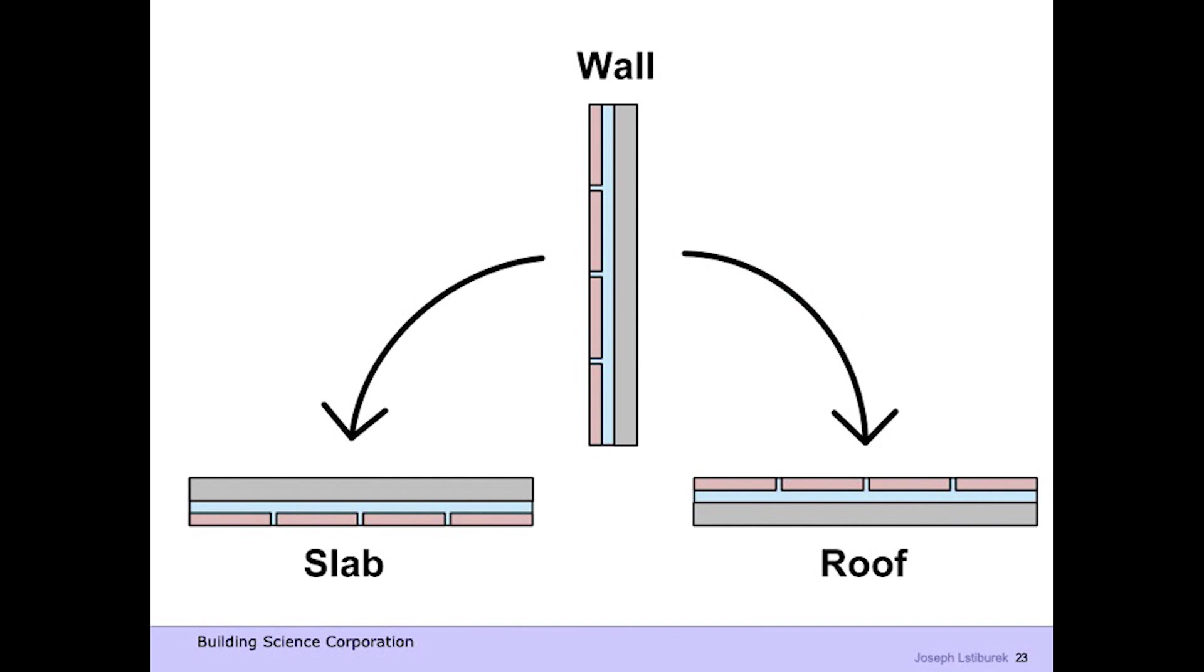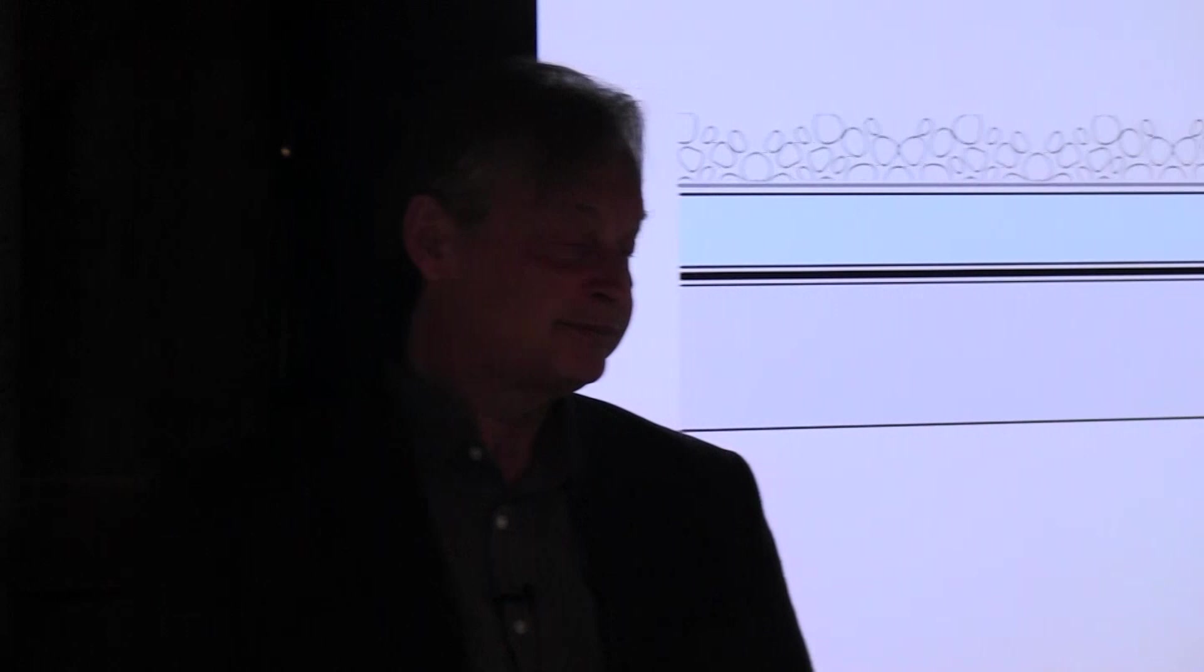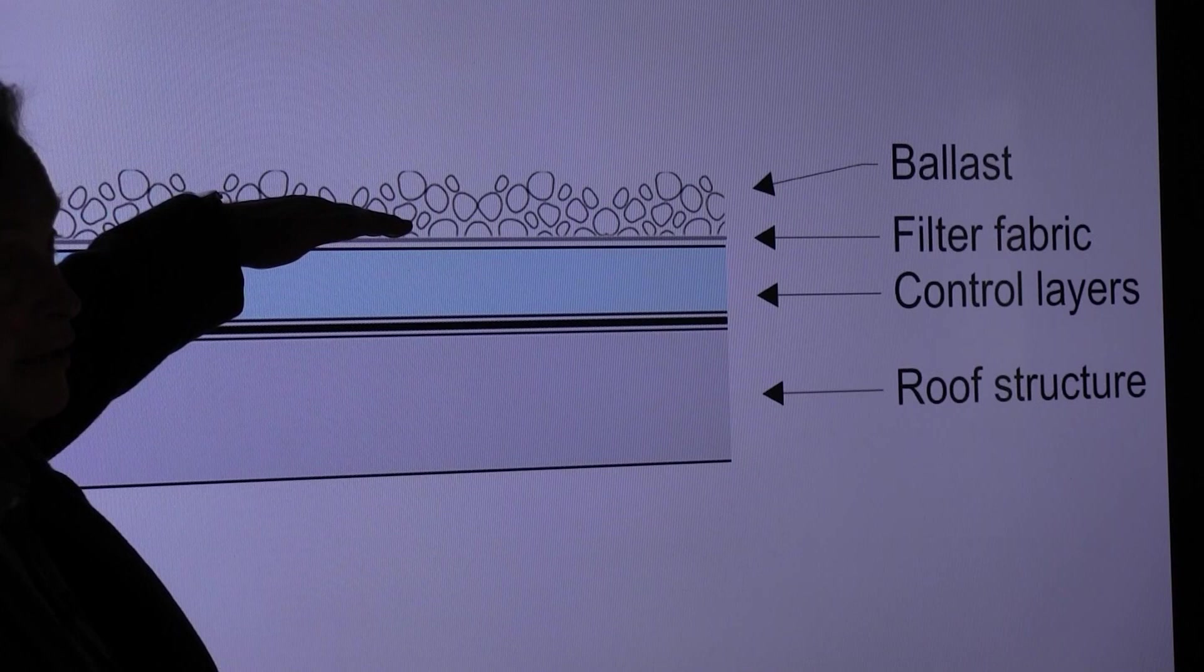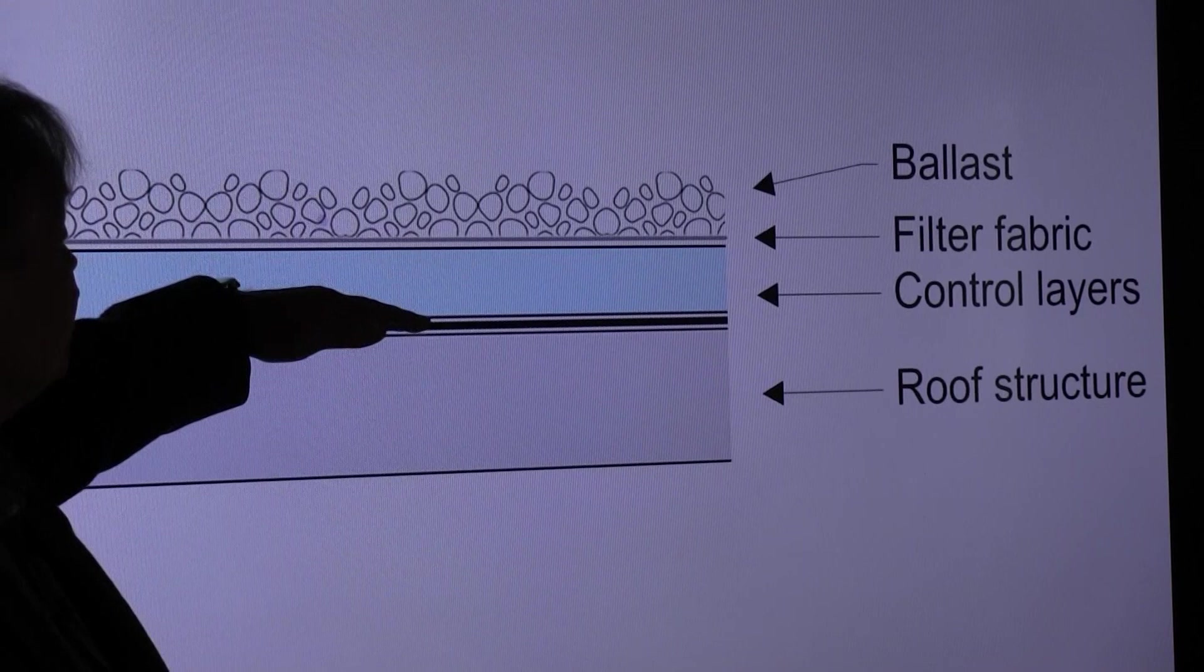So if I take the perfect wall and I lay it one way, I get the perfect roof. I lay it the other way, I get the perfect slab. So the perfect roof would have a membrane here protected against the damage functions. It's not exposed to water, heat, and ultraviolet light. Well, if I put the membrane here, I can get at it to replace it, but if you put it there, you have to.